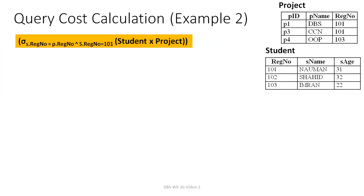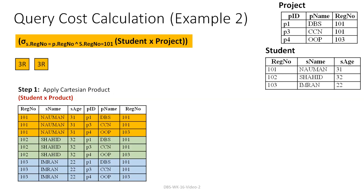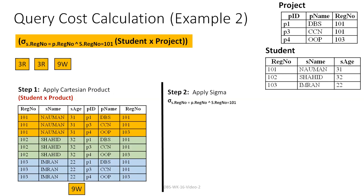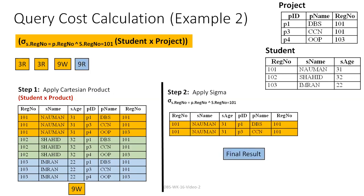Next example: Student and Project with a condition. Student must be read — 3 read operations. Project must be read — 3 read operations. The result of the join is 9 records — 9 temporary results must be written. Then selection is applied — 9 read operations. The final result gives a total of 24 operations.